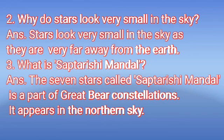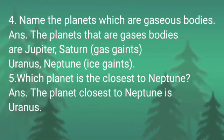Question four: Name the planets which are gaseous bodies. Answer: The planets that are gaseous bodies are Jupiter and Saturn, known as gas giants. Uranus and Neptune, which are in ice form, are known as ice giants. Question five: Which planet is closest to Neptune? Answer: The planet closest to Neptune is Uranus.